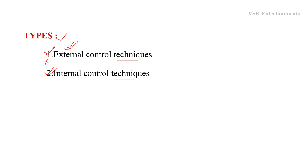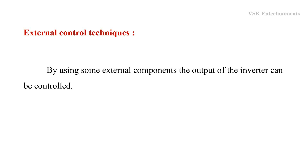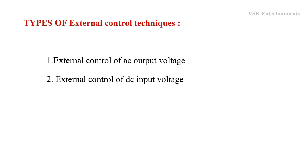Now we are going to discuss what are the types of external control techniques and internal control techniques, and how we control the output voltage of inverters using these techniques. External control techniques are classified into two types: the first is external control of AC output voltage, and the second is external control of DC input voltage.